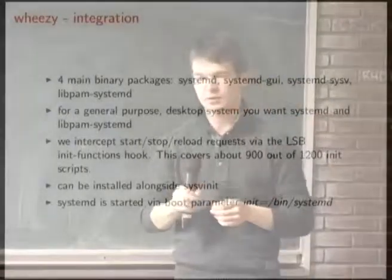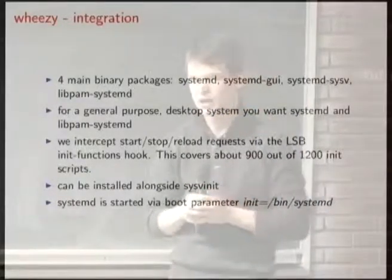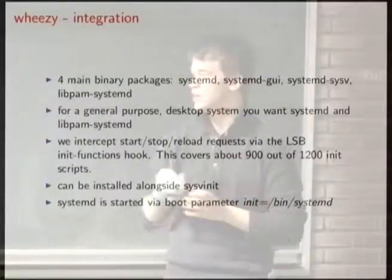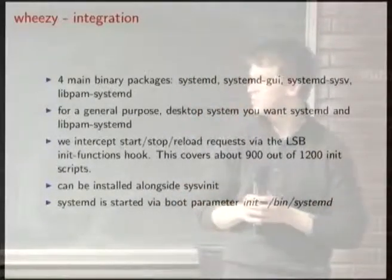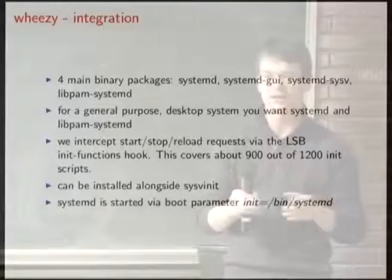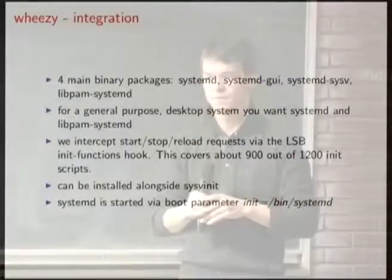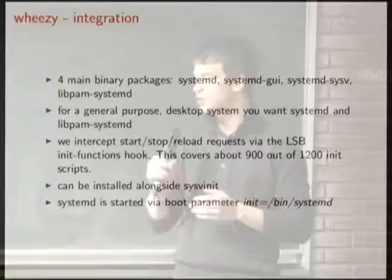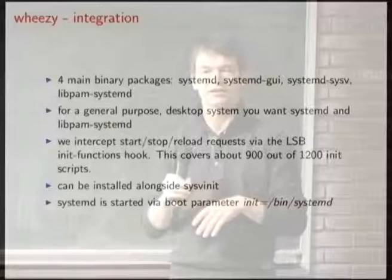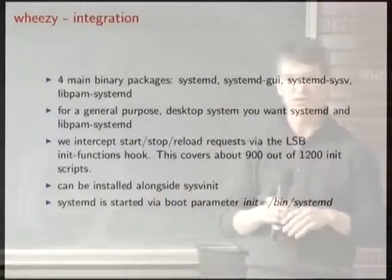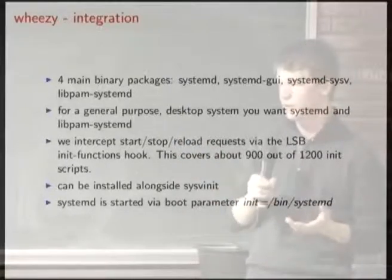Since we split off the conflicting symlinks into a different package, systemd can be installed alongside sysvinit without any conflicts. You can still have sysvinit as a safety net. All you need to do is change your boot parameter — just add 'init=/bin/systemd' to your kernel command line, and it will fire up systemd, which takes over from there. We do not change the system in any way that makes it impossible to go back to sysvinit.